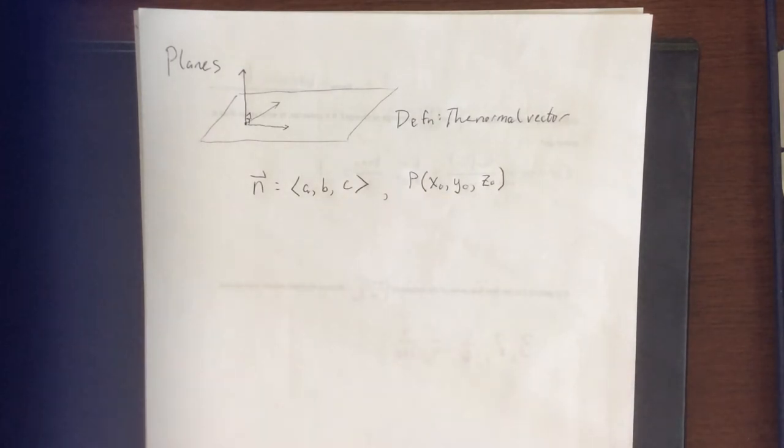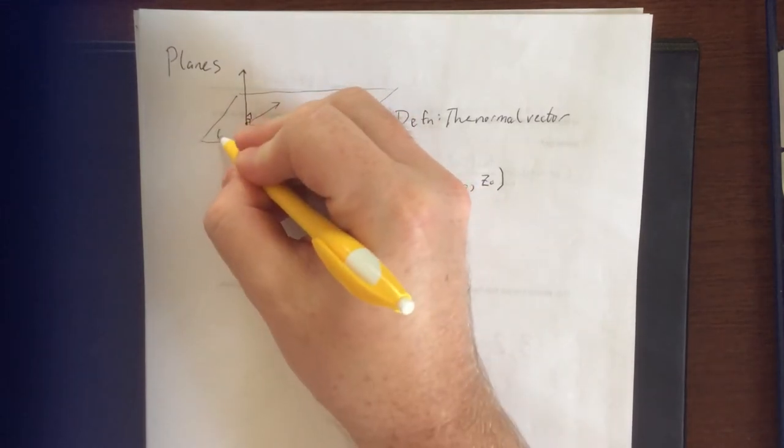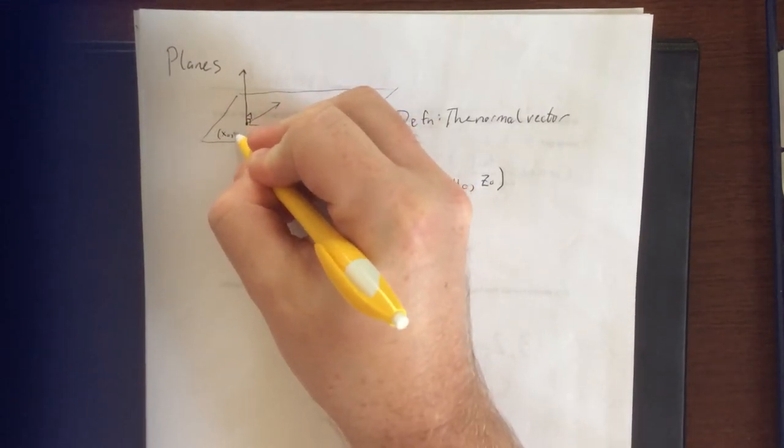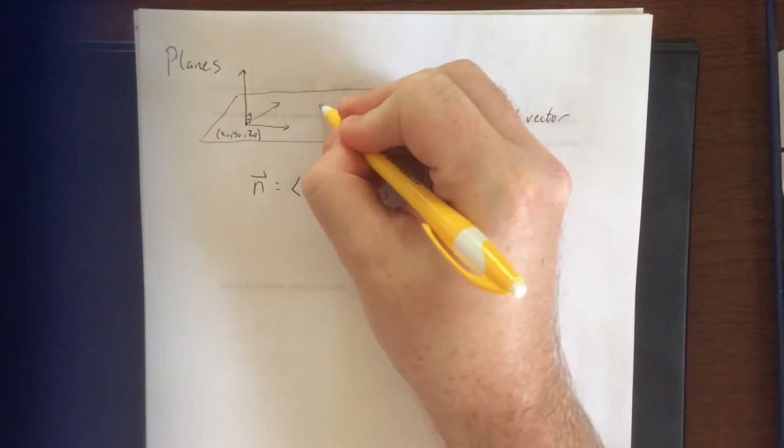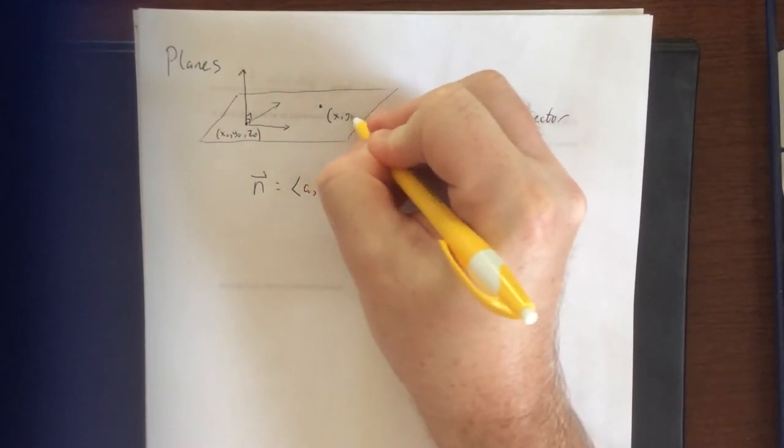The normal vector will be a, b, c. So, we'll assume for a moment that this point right here is x naught, y naught, z naught, and that any other point within the plane is simply going to be x, y, z.